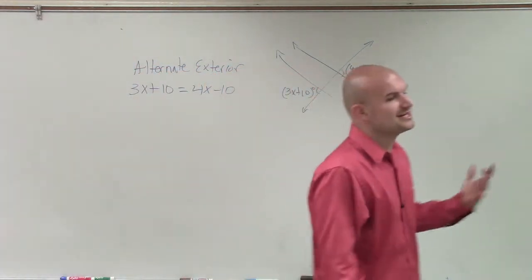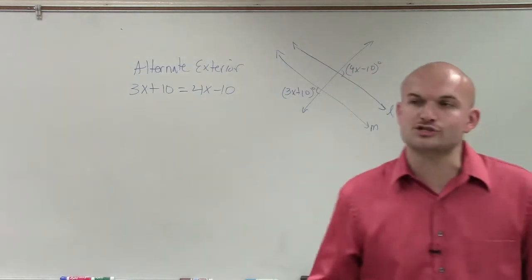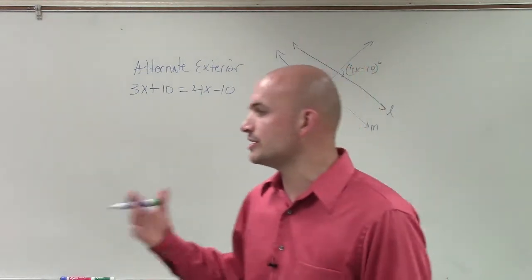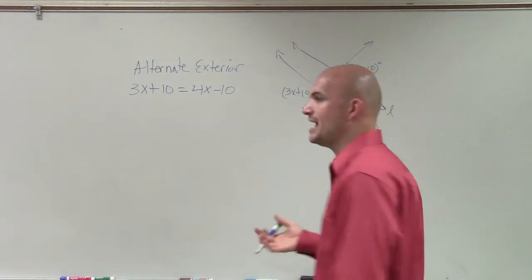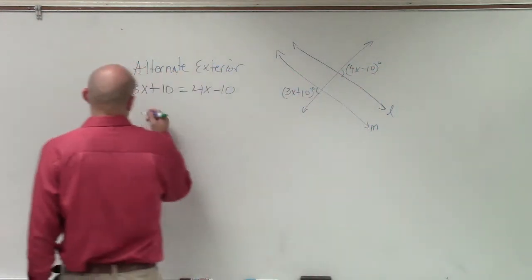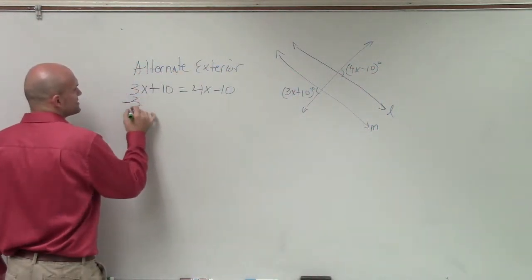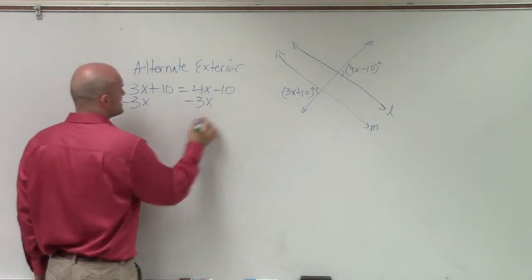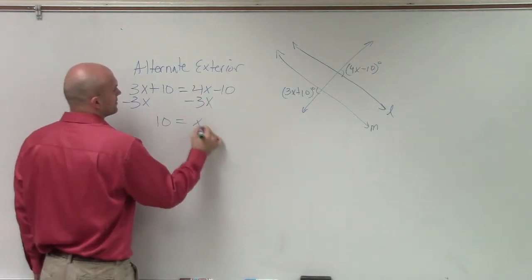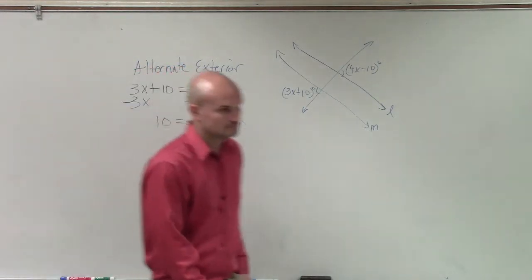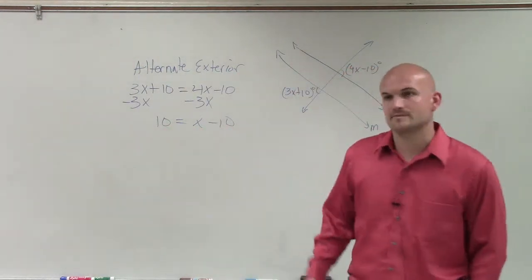So I'm writing that equation because I have alternate exterior angles, and I want to show the alternate exterior angles are going to make my two lines parallel when we have a certain value. So now I solve for x. So I get my x is on the same side, and then I can add.